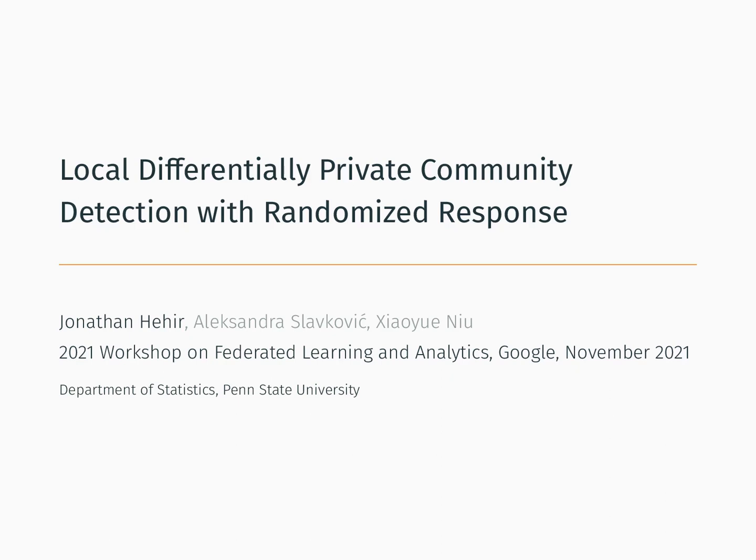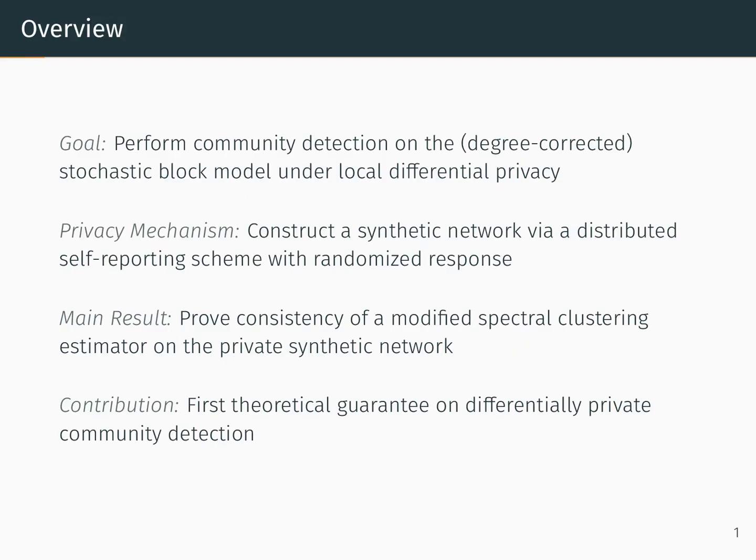Hi, my name is Jonathan Hare and this project is joint work with my collaborators from Penn State Statistics. Our goal in this project is to perform community detection on stochastic block model and degree-corrected stochastic block model under local differential privacy. The method we use to achieve this privacy guarantee is to construct a synthetic network via distributed self-reporting scheme that uses randomized response. Our main result is to prove the consistency of a modified spectral clustering estimator on the private synthetic network, and to our knowledge this is the first theoretical guarantee on differentially private community detection.